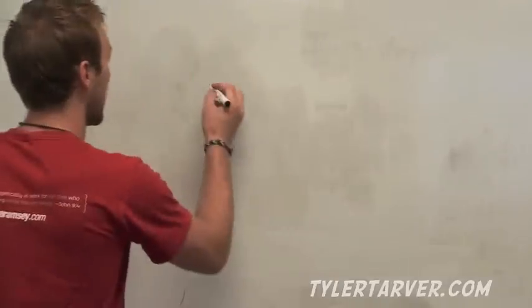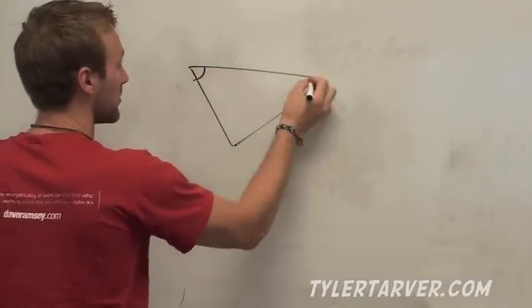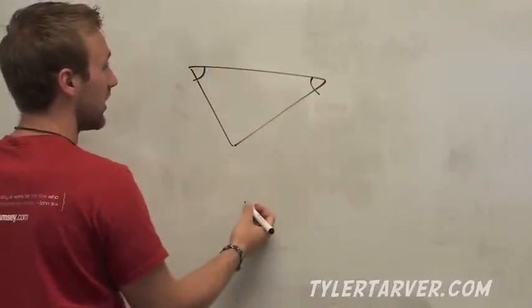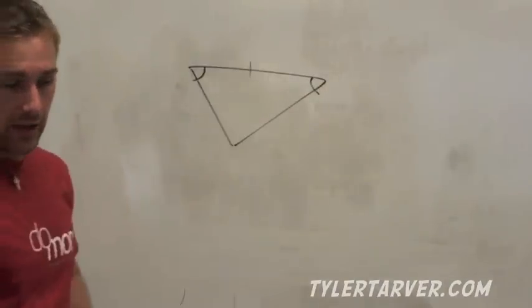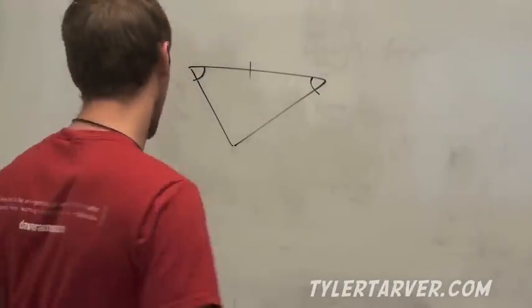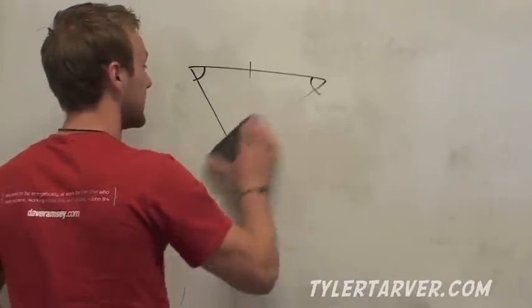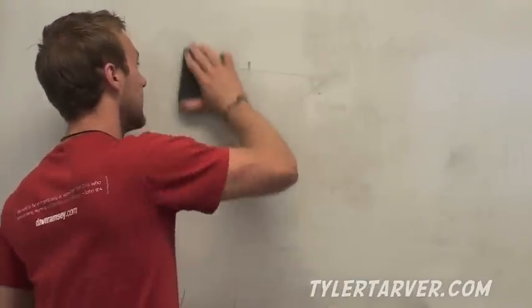The first thing we're learning today is called an included side. An included side is between two angles. So if you've got a triangle and you've got two angles, the included side is right there between them.